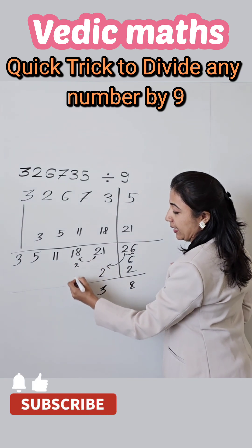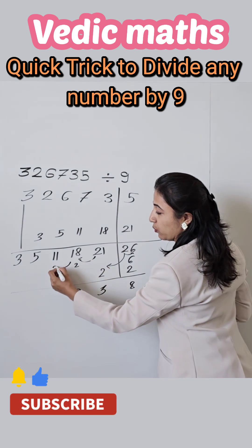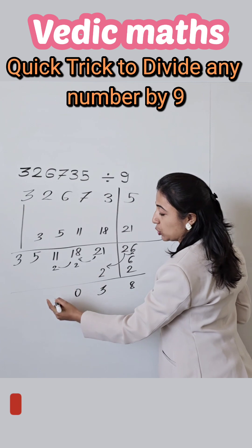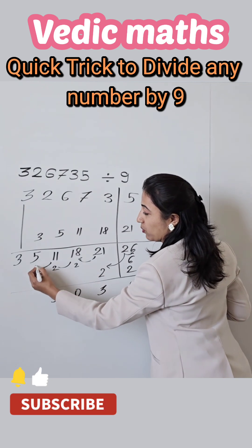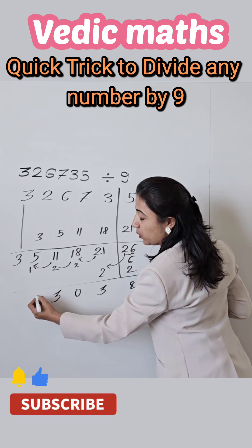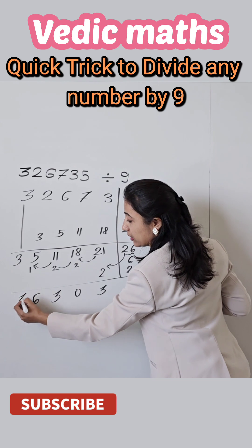2 is carrying. 2 plus 18 is 20. Again 2 we have to add in the next number. 11 plus 2 is 13. That 1 you have to add in the next number. 1 plus 5 is 6 and this 3.